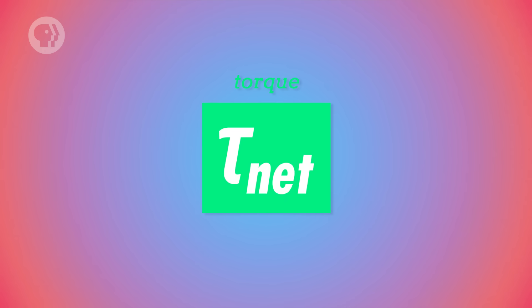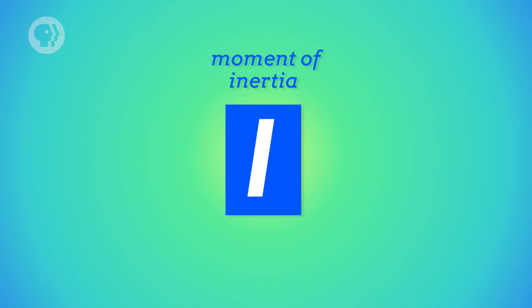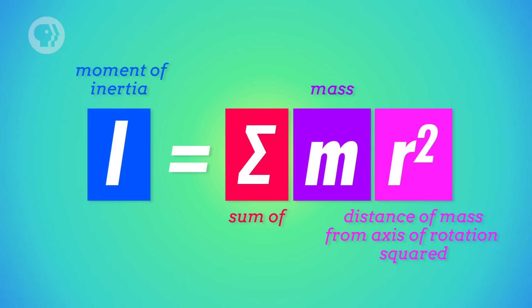You know how for translational motion, a net force on an object is equal to its acceleration times its mass? Well, something similar applies to rotational motion too. The net torque on an object is equal to its angular acceleration times what's known as its moment of inertia. We've talked about inertia before, at least as it relates to translational motion — basically, it's an object's tendency to keep doing what it's been doing. An object with lots of inertia is harder to speed up or slow down. And in translational motion, the inertia of an object depends on mass.